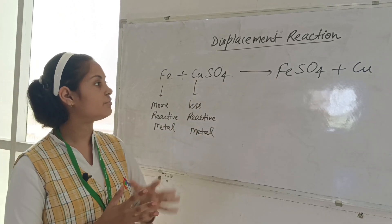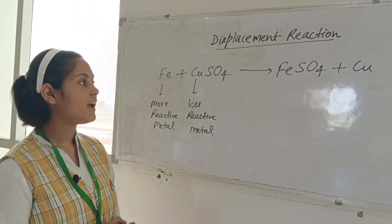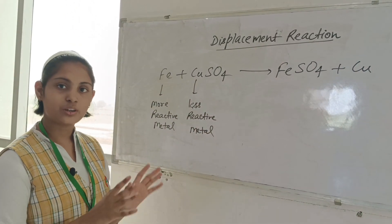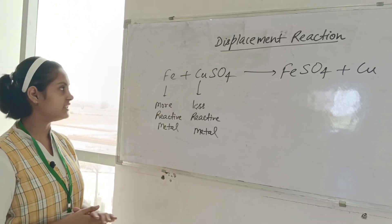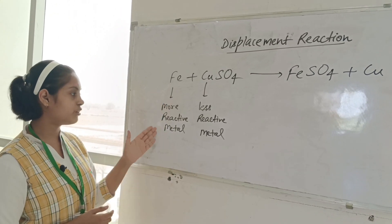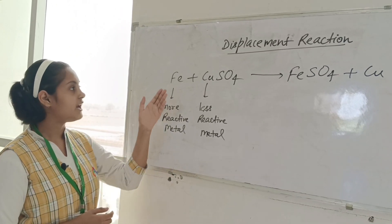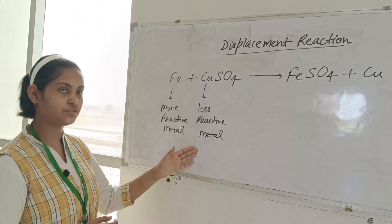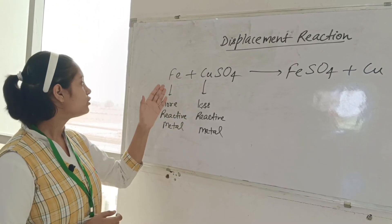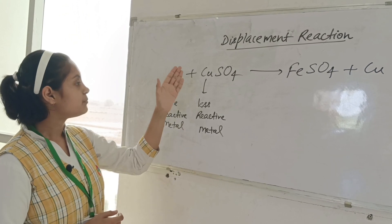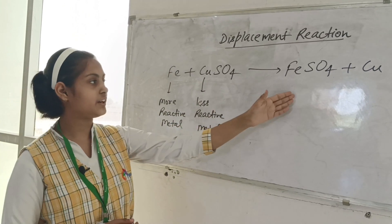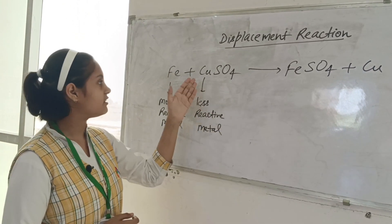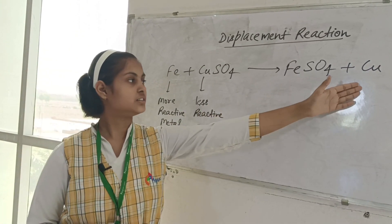In this reaction, what actually happened is Fe is a more reactive metal and Cu is a less reactive metal, so Fe displaces Cu and forms ferrous sulfate, while Cu is released.